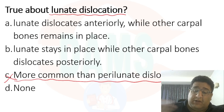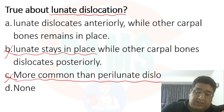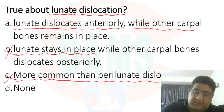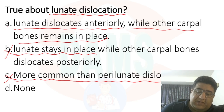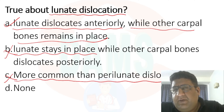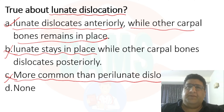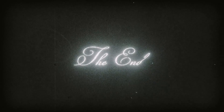Now applying this to the MCQ options: 'Lunate dislocation is more common than perilunate dislocation' — this is wrong, because perilunate is more common. 'Lunate stays in place' — no, in lunate dislocation, lunate dislocates, so it cannot stay in place. 'Lunate dislocates anteriorly while the rest of the bones remain in place' — this is true. So the answer has to be option A. Thank you so much, God bless.